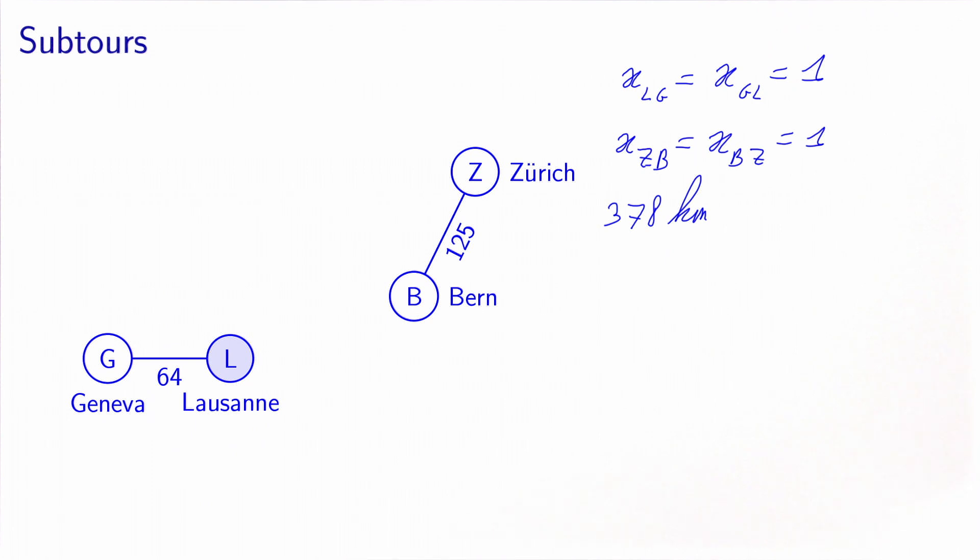We have exactly one predecessor for each city: for Geneva it's Lausanne, for Lausanne it is Geneva, for Bern it's Zurich, and for Zurich it's Bern. Same thing, there is exactly one successor for each city. But clearly, this is not a valid solution. It does not represent a tour.